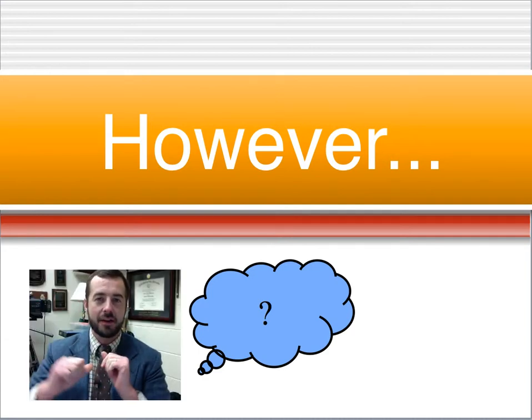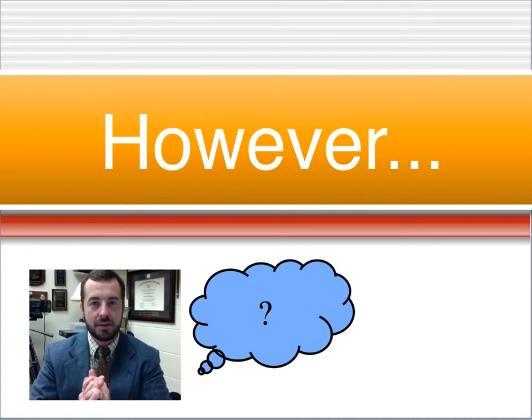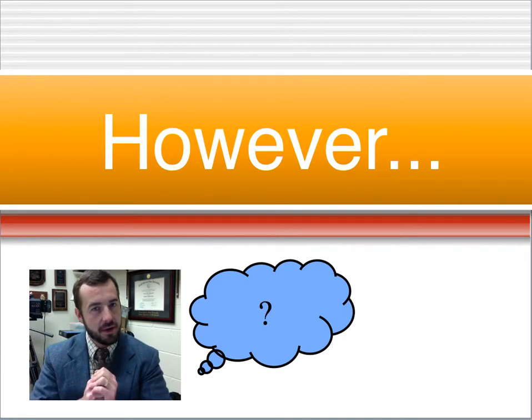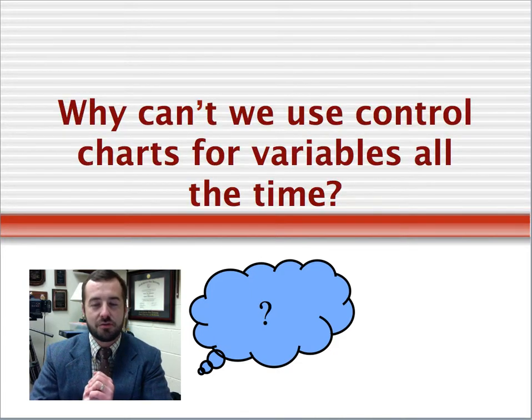I've got good news and bad news for you. Control charts don't apply all the time, so we're not done yet. We can't just put a control chart on every single problem. So the bad news is that we're not done yet. We haven't gone through all the important statistical process control learning concepts, but the good news is that we get to learn some more. And so the question is, why can't we use control charts for variables all the time?